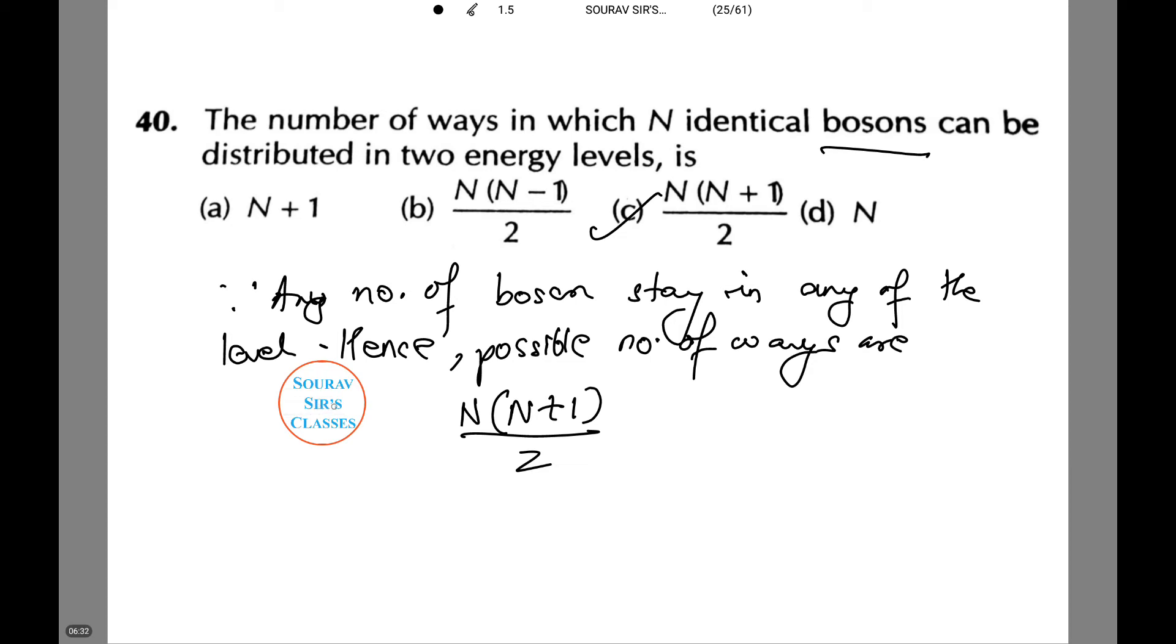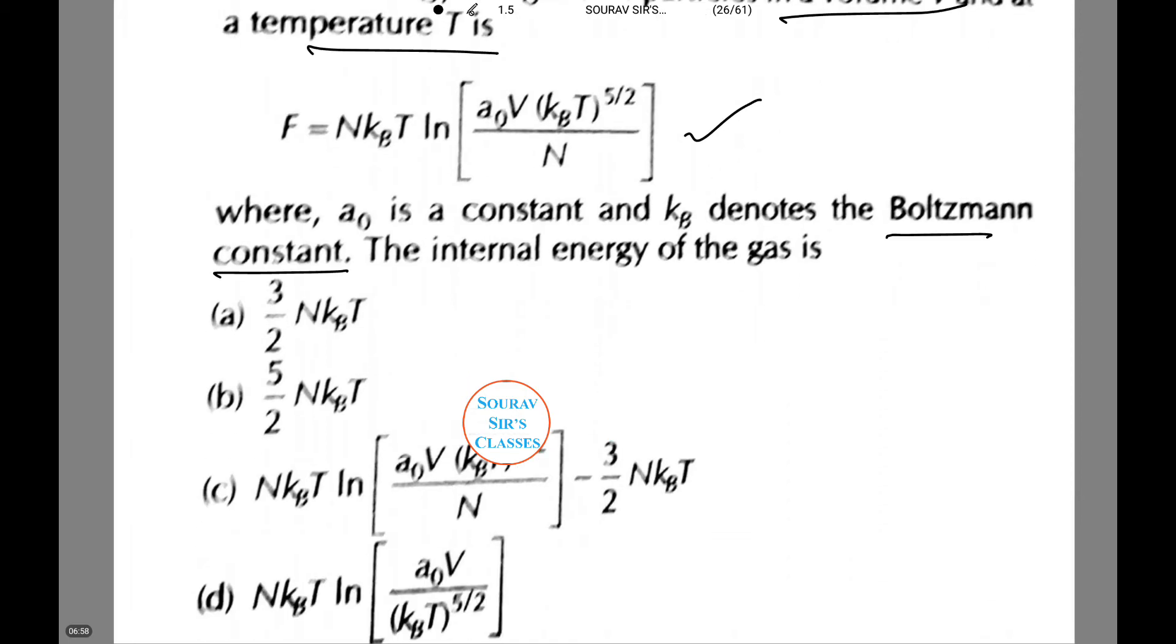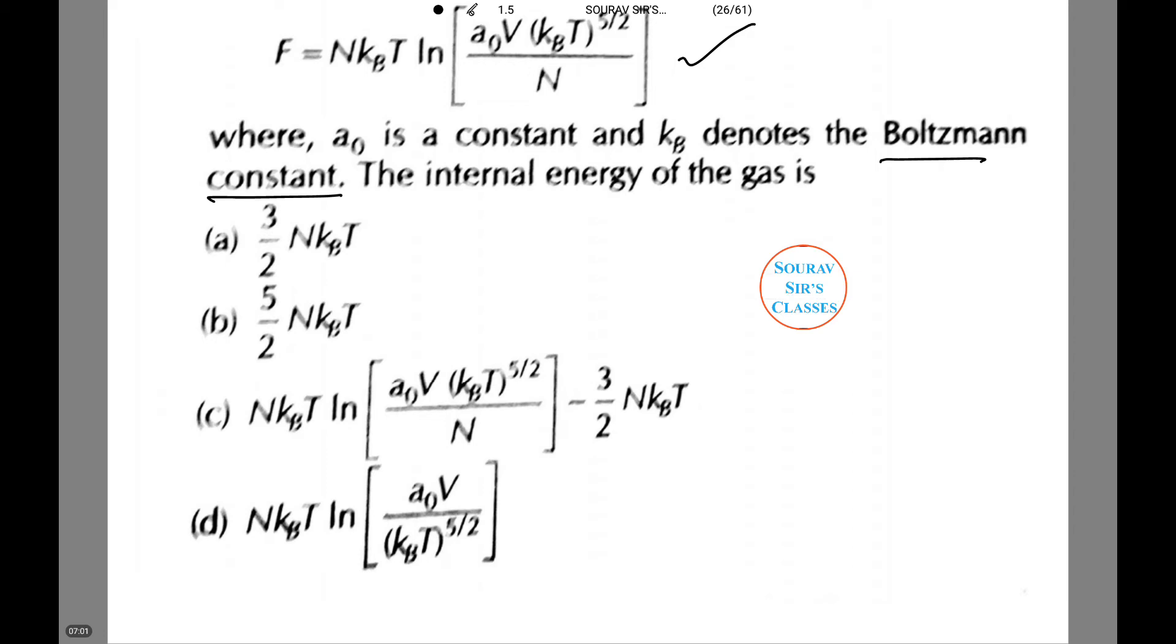Moving on to the next question. Now we have a very long question. The free energy of a gas of N particles in a volume V at temperature T is given as F = NkBT ln[a₀V(kBT)^(5/2)/N], where a₀ is a constant and kB denotes the Boltzmann constant. The internal energy of the gas is among the following. Please notice them because I'm going to do the calculation in a new screen.